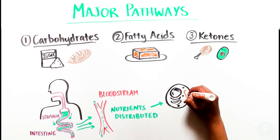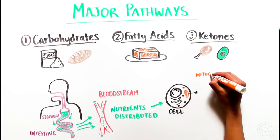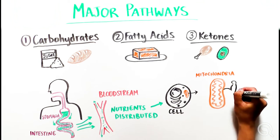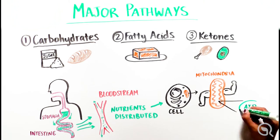Once inside the cell, the broken-down products of nutrients are used to fuel production of ATP. This can happen both inside and outside the mitochondria, an organelle famous for being the powerhouse of the cell.